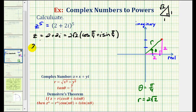This means z^5 would be equal to r^5, or (2√2)^5, times cos(5π/4) + i·sin(5π/4).